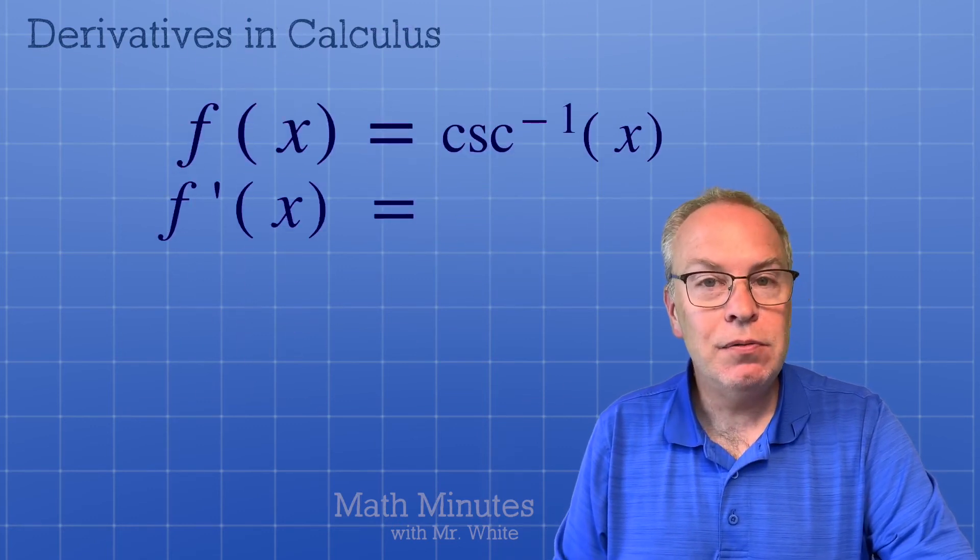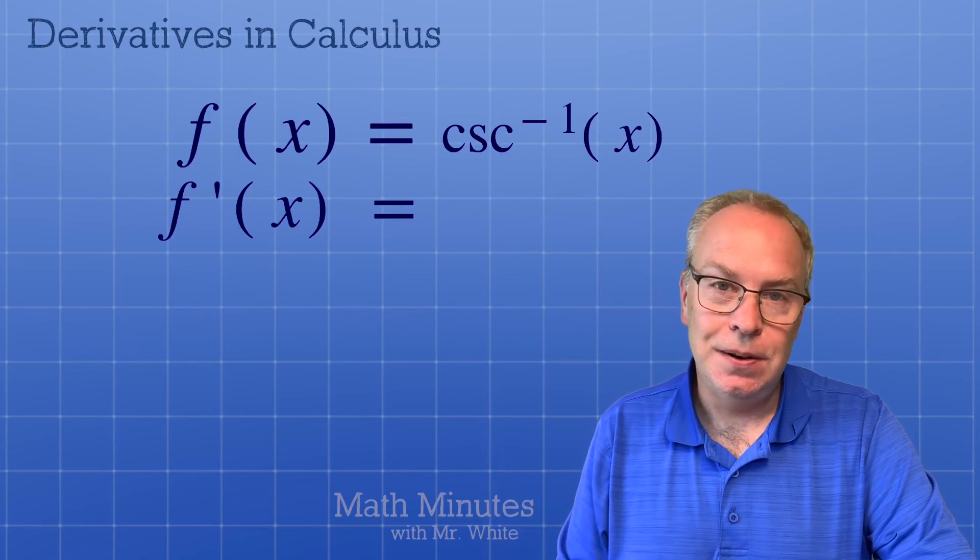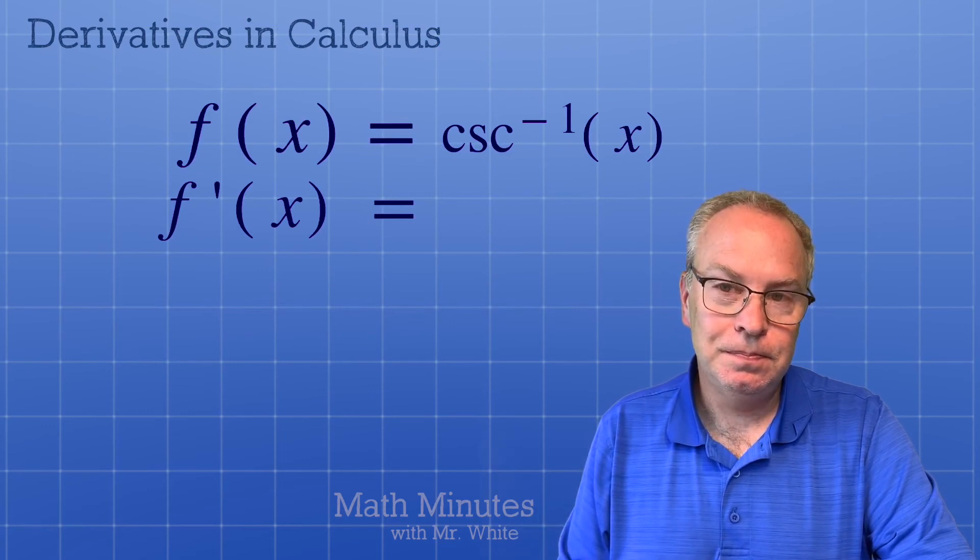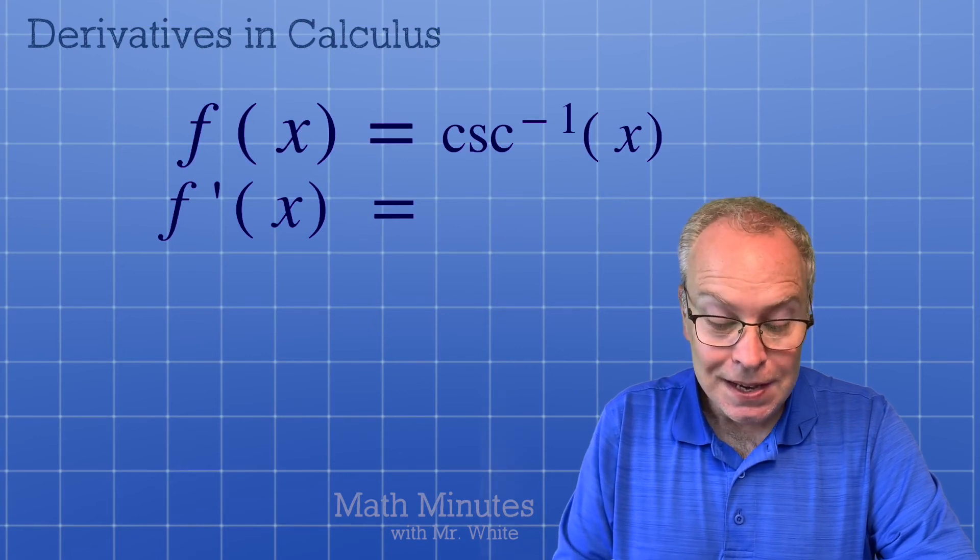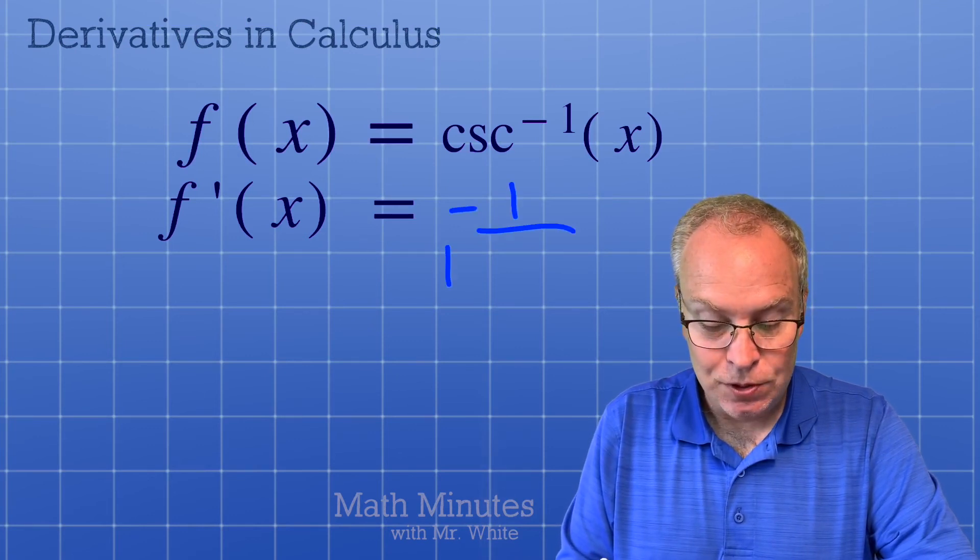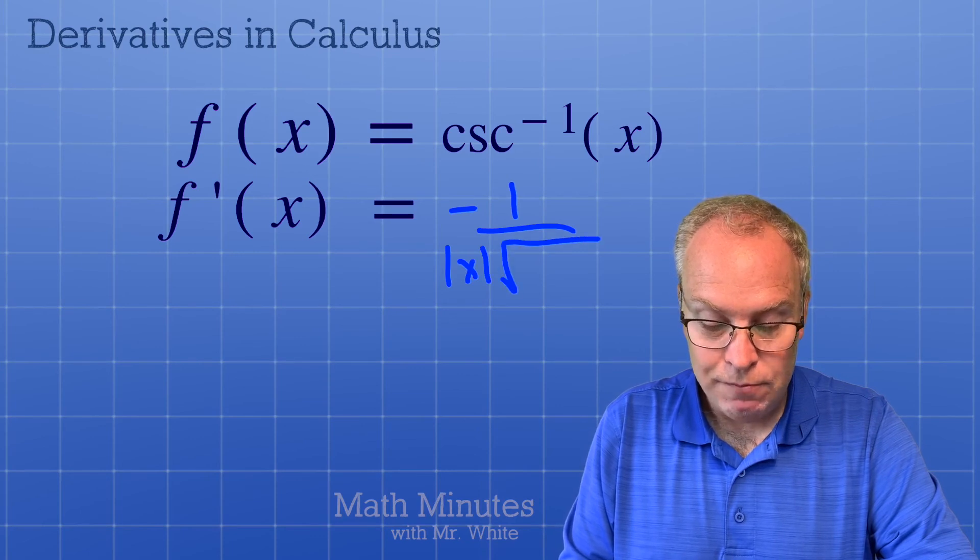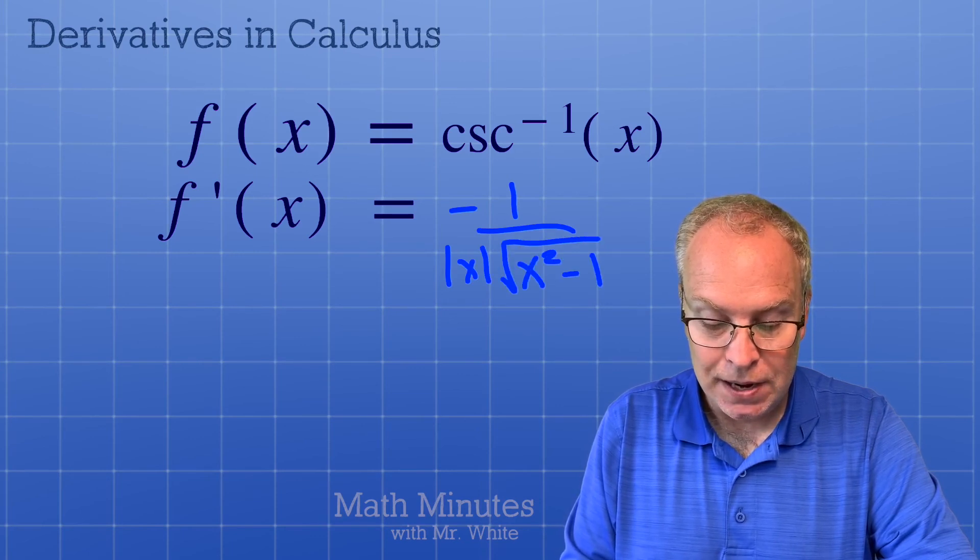What is the derivative of inverse cosecant? Negative 1 over the absolute value of x times the square root of x squared minus 1.